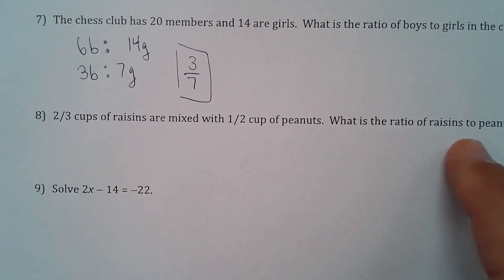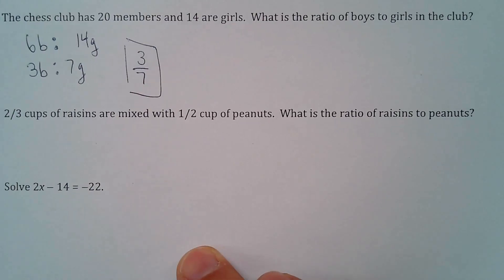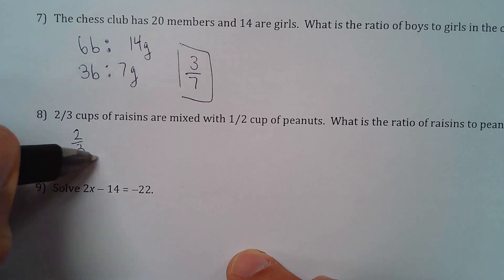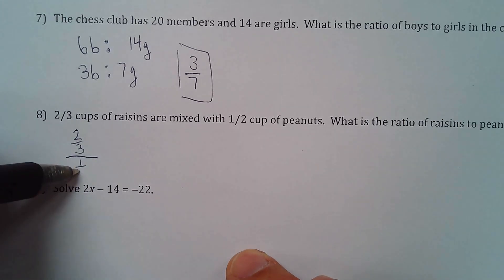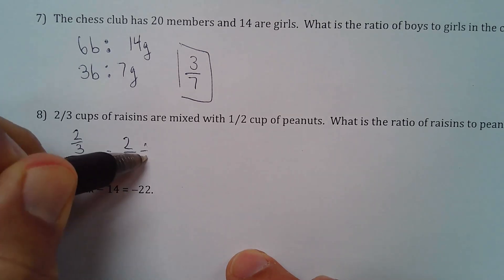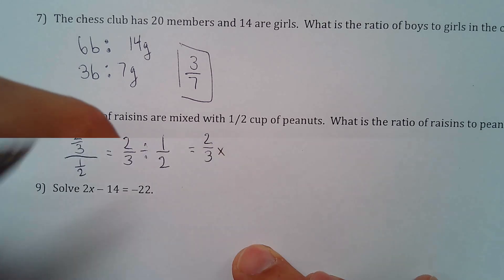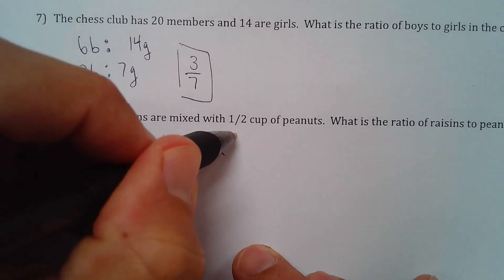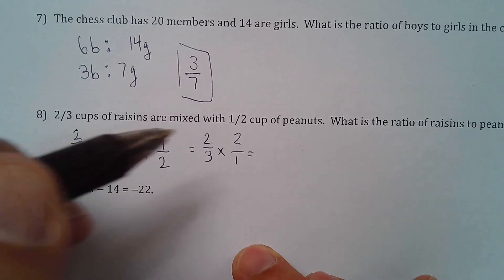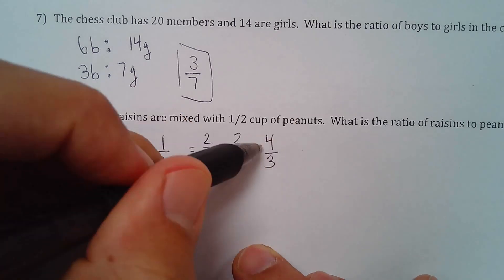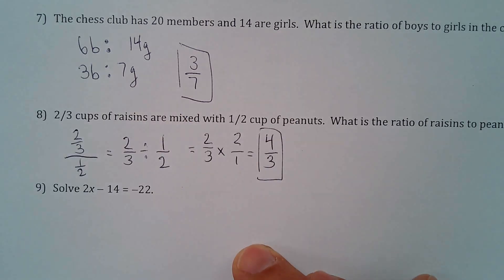Number 8. 2 thirds cups of raisins are mixed with 1 half cup of peanuts. What is the ratio of raisins to peanuts? Raisins to peanuts. So 2 thirds, 1 half. And that right there is division. So it's 2 thirds divided by 1 half. And when we divide fractions, we flip the second fraction and we multiply them. So that is 2 thirds times 2 over 1. And then we can multiply across. 2 times 2 is 4 and 3 times 1 is 3. And we have 4 thirds. Ratio of raisins to peanuts is 4 thirds.